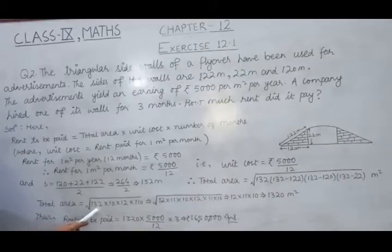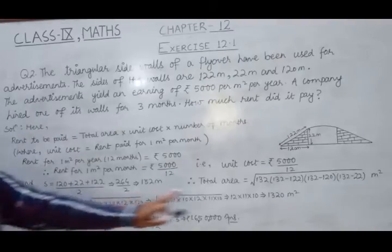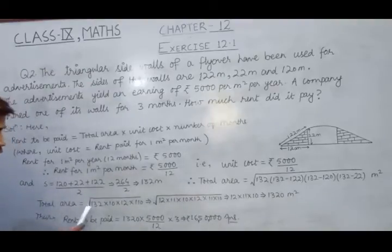So, that total area is under root 132 into 10 into 12 into 110. And on simplification, this total area becomes 1320 square meter.